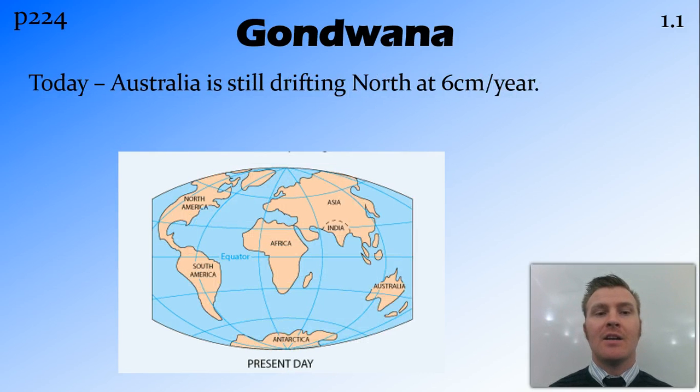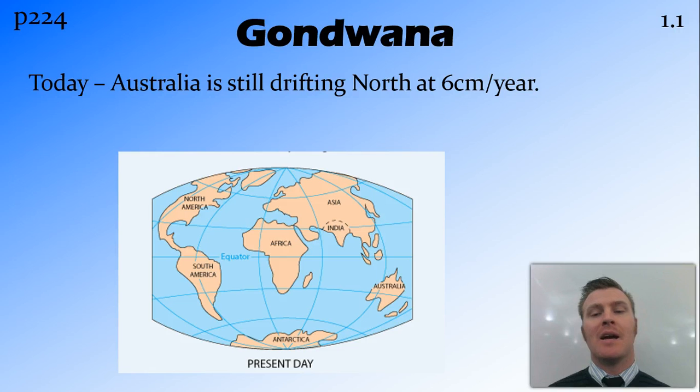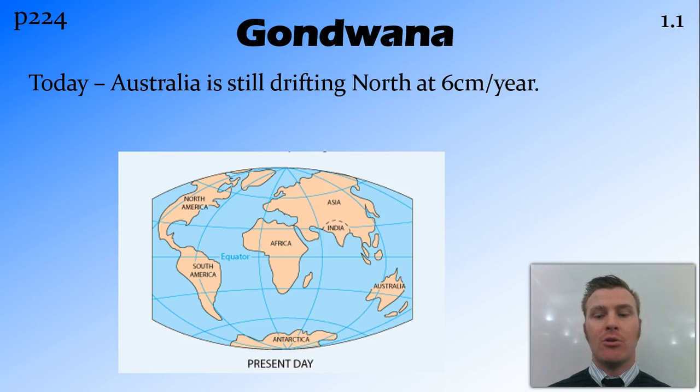Today, Australia is still drifting to the north away from Antarctica, and the continent is moving at about six centimetres per year.